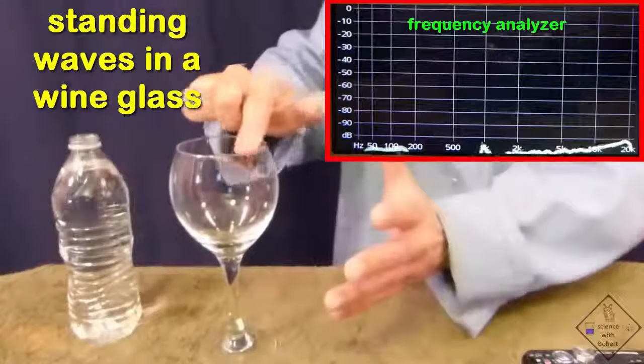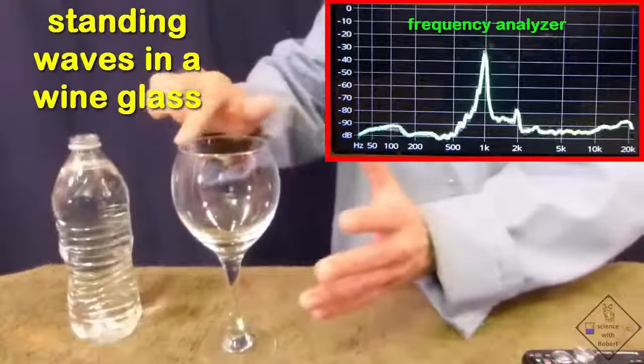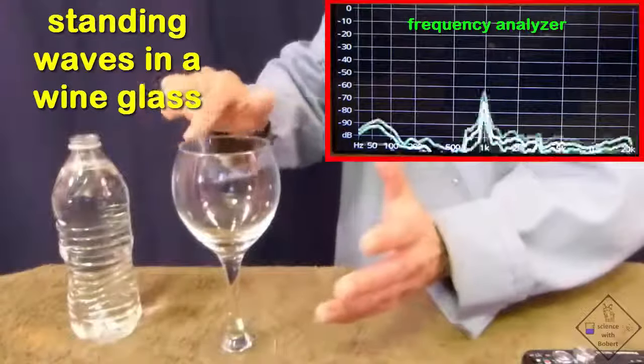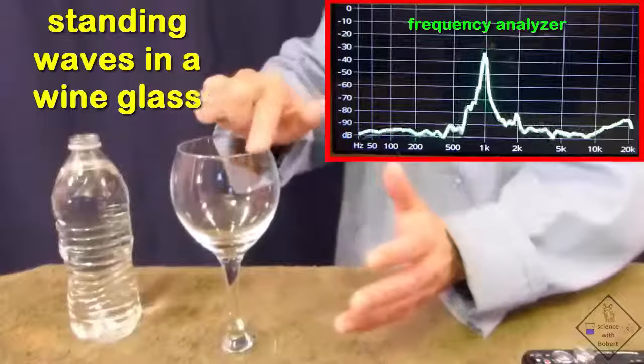Remember, standing waves are actual physical oscillations in the object, so Dr. Smith can only hold the glass at a node. If he holds the glass somewhere else, the standing wave will dissipate its energy into his hand, stopping the generated sound.